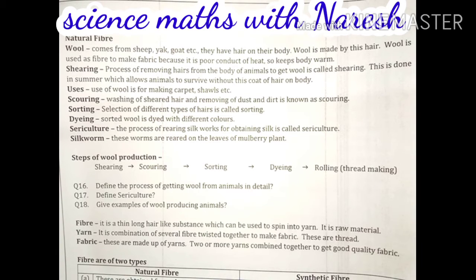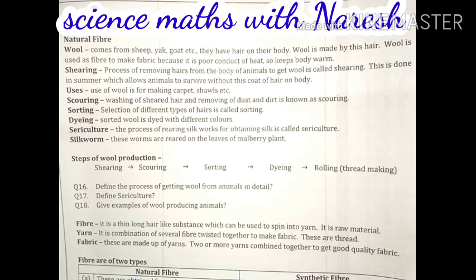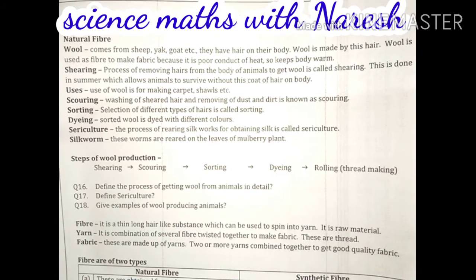After shearing, scouring is done. The hairs taken from the body of animals are washed — the process of washing sheared hair and removing dust and dirt is called scouring. Since the animal hairs carry a lot of dirt and dust, removing these particles from the hairs is what the scouring process involves.